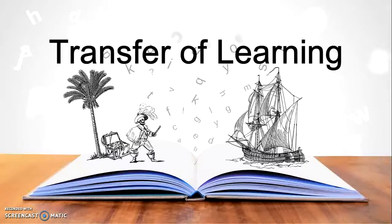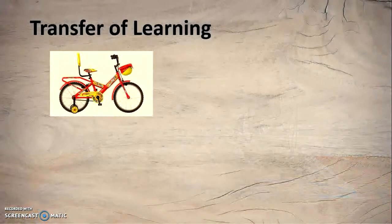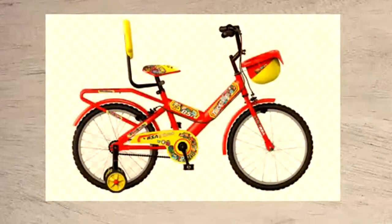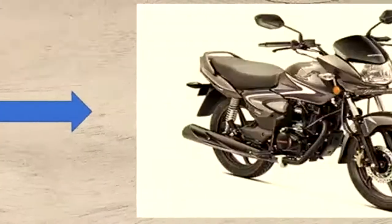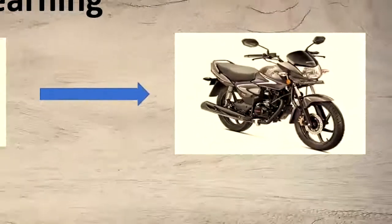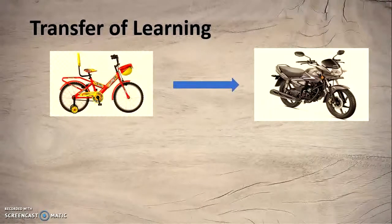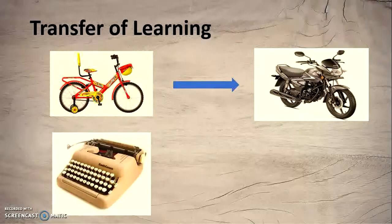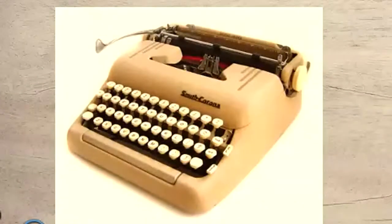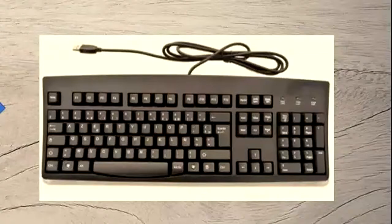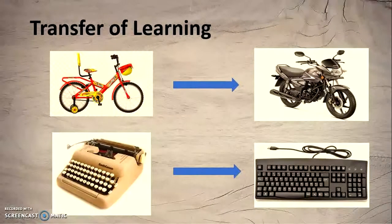Hello and welcome. In this session on transfer of learning, sometimes also known as transfer training. You must have observed that if someone is riding a bicycle and wants to learn how to ride a motorbike, the person who rides a bicycle learns riding on a motorbike more easily compared to a person who has never ridden a bicycle. Similarly, people who were comfortable typing on typewriters found it easy to work on computer keyboards compared to those who had never used a typewriter. So what can you conclude from these two examples?